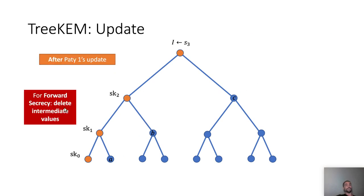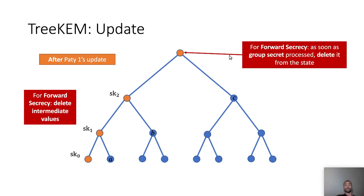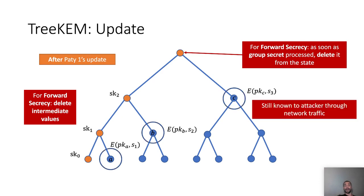For forward secrecy, we need to delete intermediate values — the SI values that were computed need to be deleted. Also, as soon as the group secret is processed by the high-level protocol, it needs to be deleted from the state. However, we observe that the ciphertexts generated by the update operation are known to the attacker since he has access to the network traffic. So if at some future point the adversary, via some corruption, manages to learn SKA, SKB, or SKC, he is able to compute the update secret generated by party 1.